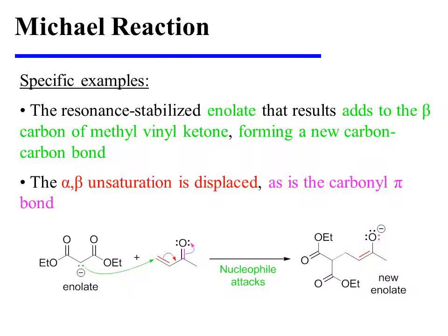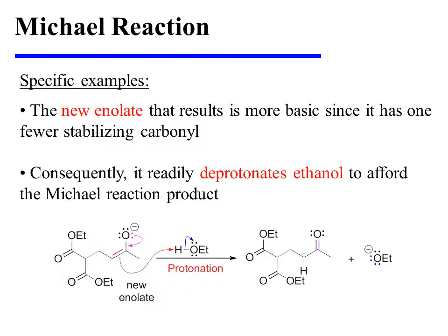The resonance-stabilized enolate that was formed then adds to the beta-carbon of methyl vinyl ketone, forming a new carbon-carbon bond in the process. The alpha-beta unsaturation is displaced, as is the carbonyl pi bond. This new enolate is more basic since it has one fewer stabilizing carbonyl. Consequently, it readily deprotonates ethanol to afford the Michael reaction product.